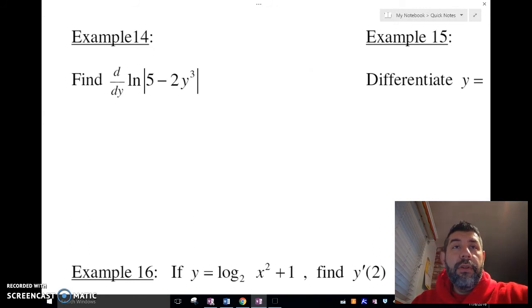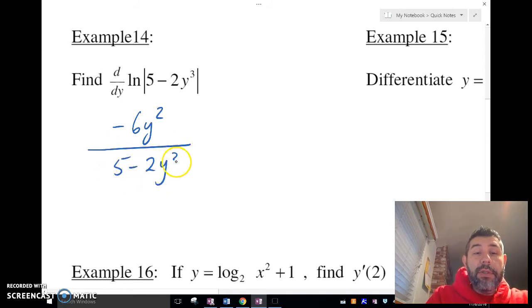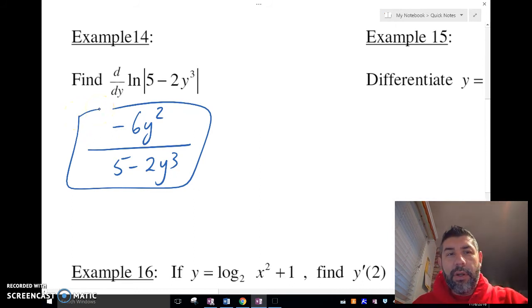Let's take a look at an example. Let's take the derivative here of ln of absolute value of 5 minus 2y cubed. It's the same thing as we did before. We're going to do the derivative of the inside, which is negative 6y squared, divided by what's inside, 5 minus 2y cubed. I just use the chain rule there. I did it kind of all at once like I told you before.